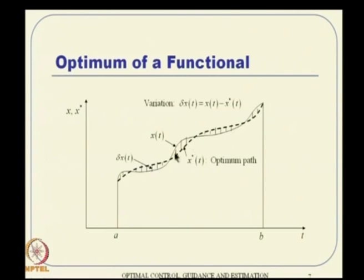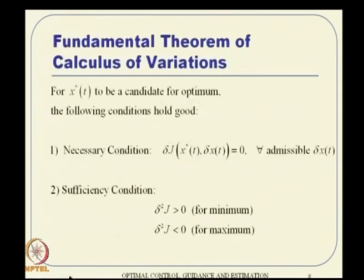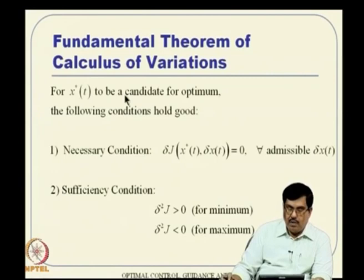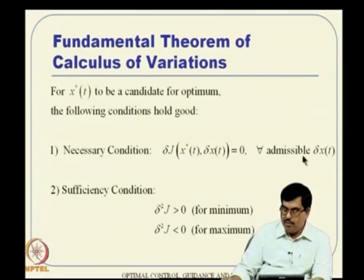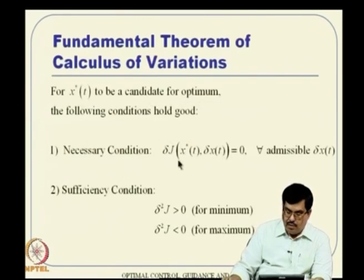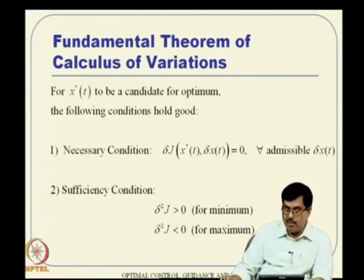We discussed the variation concept and noted that if x-star is an optimum path, we are talking about a neighborhood path of that. For x-star of t to be a candidate optimum, the necessary condition is that the first variation must equal zero for all admissible delta x. The sufficiency condition is that the second variation should be greater than 0 for a minimum, or less than 0 for a maximum. These concepts are parallel to static optimization but applied within the framework of calculus of variations.